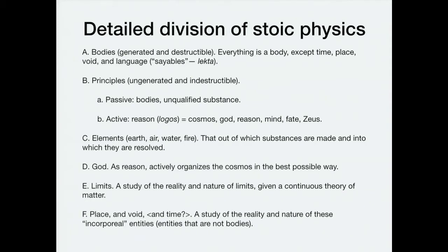Then we could teach about the principles. Unlike bodies, principles are ungenerated and indestructible, and of two kinds: the passive kind — unqualified substance, pure material body — and on the other hand, an active principle: reason, fundamentally reason, or in Greek logos. But this is equivalent to cosmos, god, reason, mind, fate, even Zeus. So the active principle that organizes all this passive inert material stuff is rationally organized, and you can think of it as being organized by Zeus, or God, or the mind, or fate — all of those are identical equivalent notions constituting the active principle.